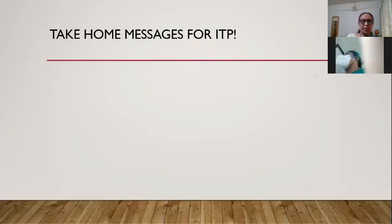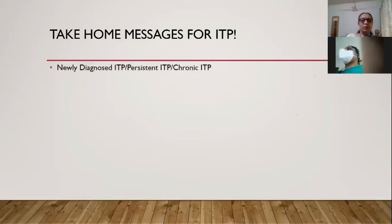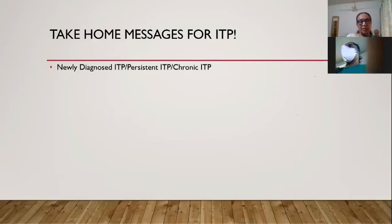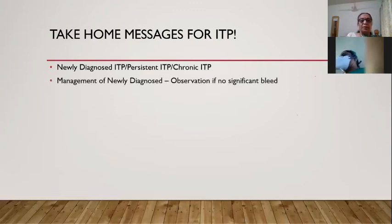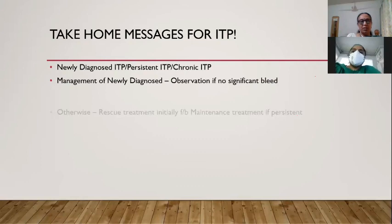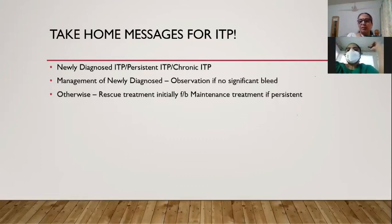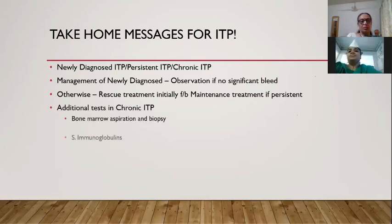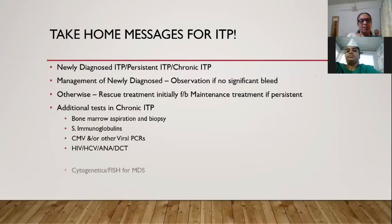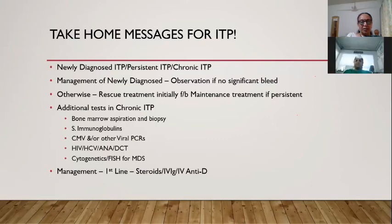Take-home messages for ITP: Classify as newly diagnosed, persistent, or chronic. Newly diagnosed with no significant bleed and adequate platelet count — observation only. Otherwise, rescue treatment initially followed by maintenance if persistent. Chronic ITP requires additional testing: bone marrow aspiration/biopsy, immunoglobulins, EBV and other viral PCRs, triple H, ANA, Coombs test, cytogenetics and FISH for MDS. First-line management: steroids, IV Ig, IV anti-D. Second-line: rituximab, eltrombopag, other immunosuppressives.